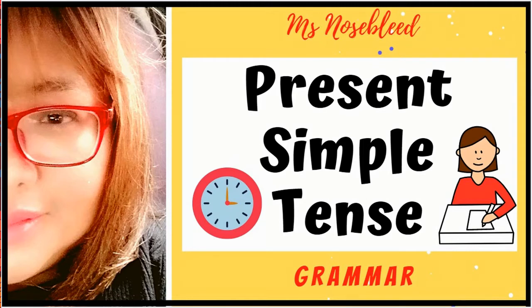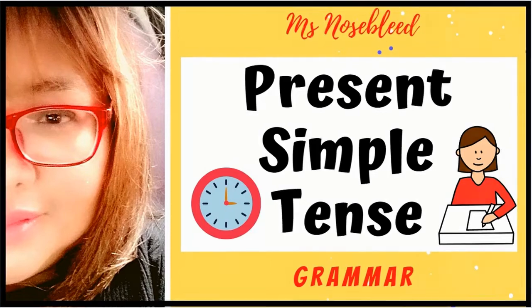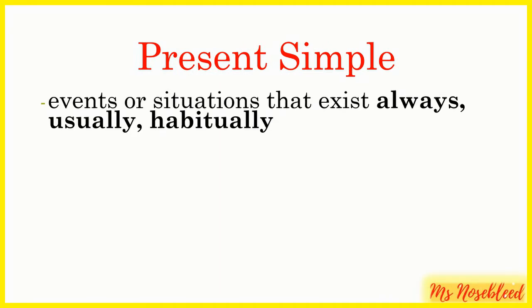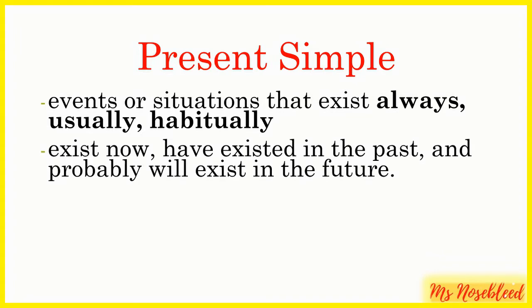Let's have a quick review. When do we use present simple? We use present simple when we talk about events or situations that exist always, usually, and habitually. We also use present simple when we talk about things that exist now or have existed in the past and probably will exist in the future.